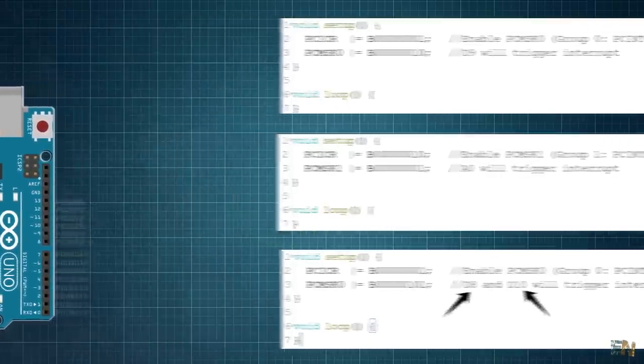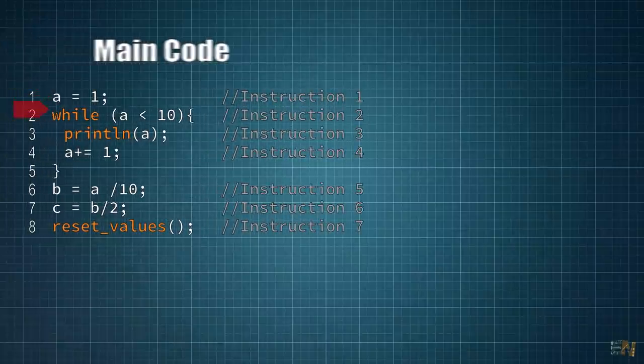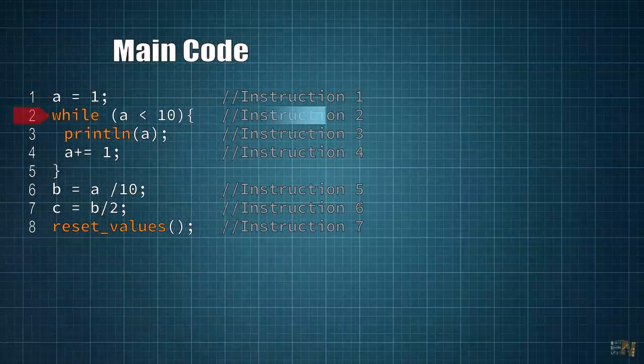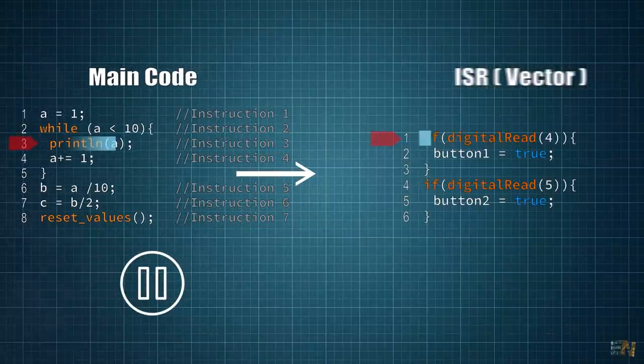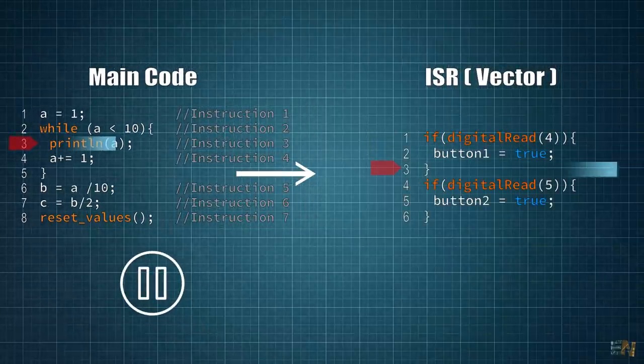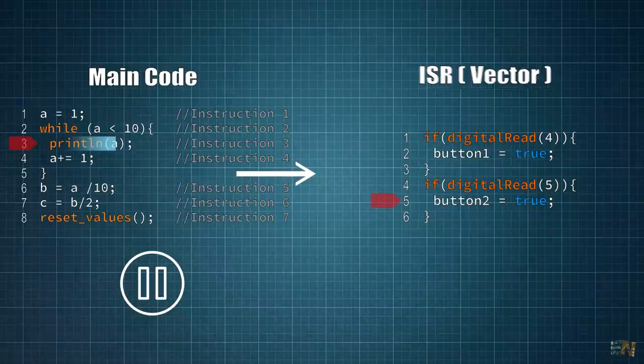Okay, so at this moment we know how to set the pins to be able to trigger interruptions. But as you remember, when the interruption is triggered, we pause the main code and we jump to the interruption vector where we execute the code for that interruption.